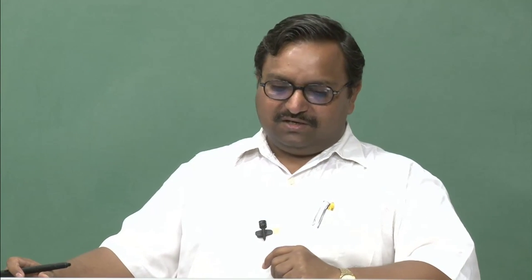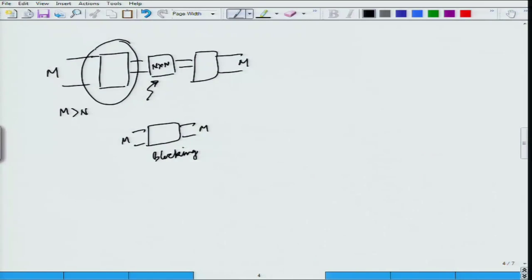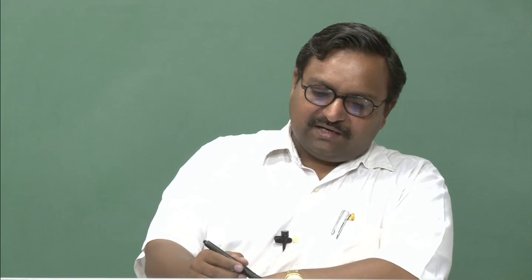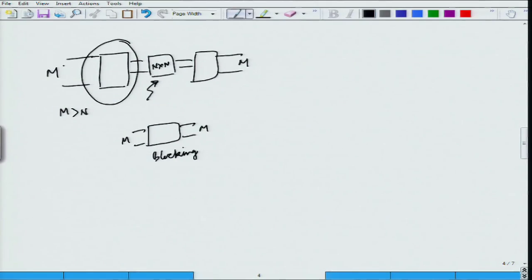I will digress to state probability estimation for a switch before returning to the M×N composite switch. As long as the number of calls through the switch is less than n, it remains non-blocking. Once the number of active calls reaches n, any new call cannot be completed and the switch is in a blocking state. We need to estimate the blocking probability, which requires basic queuing theory fundamentals.